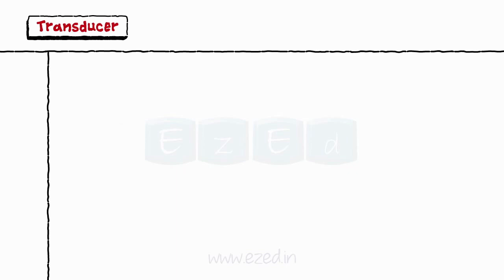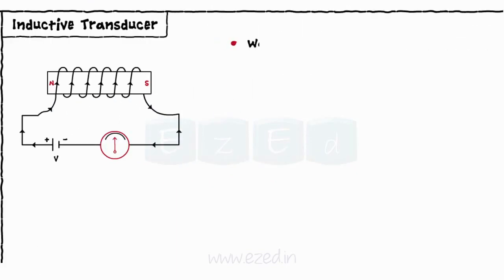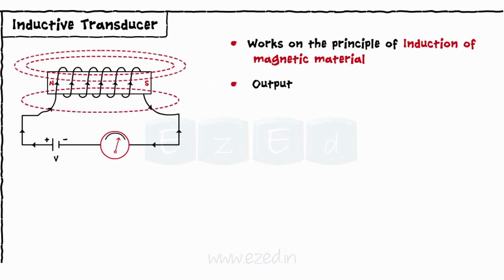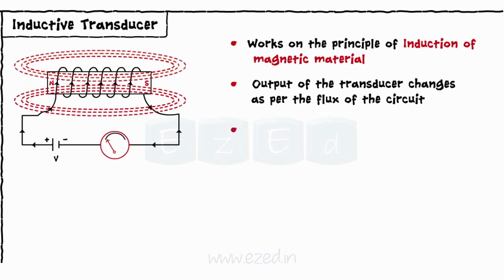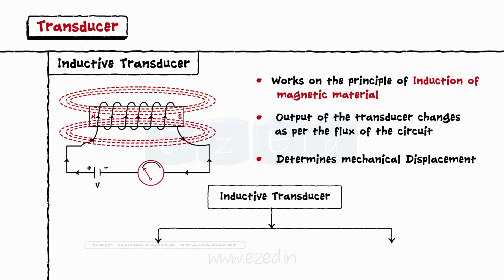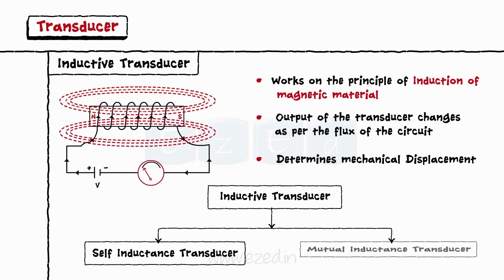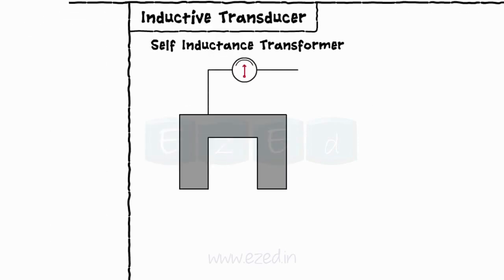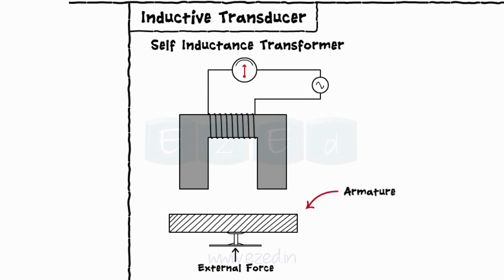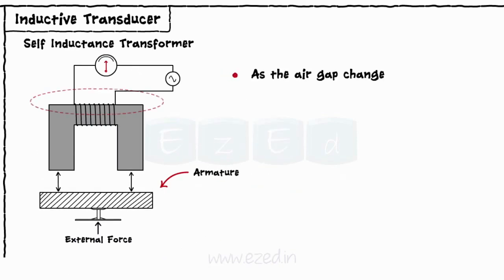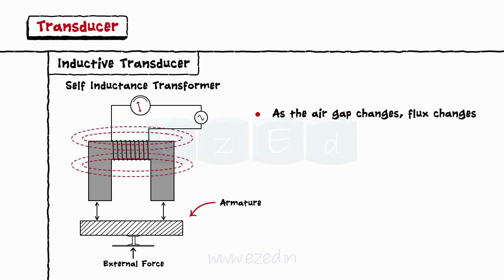The next type of transducer is an inductive transducer. Inductive transducers work on the principle of induction of magnetic material. The output of the transducer changes as per the flux of the circuit, thereby determining the mechanical displacement of an object. There are two types: self-inductance transducer and mutual inductance transducer. In a self-inductance transducer, the magnetic material is connected to the electrical circuit and is excited by alternating current. At the bottom, there is another magnetic material that acts as an armature. As the armature is moved, the air gap between the two magnetic materials changes and the flux generated by the circuit changes.